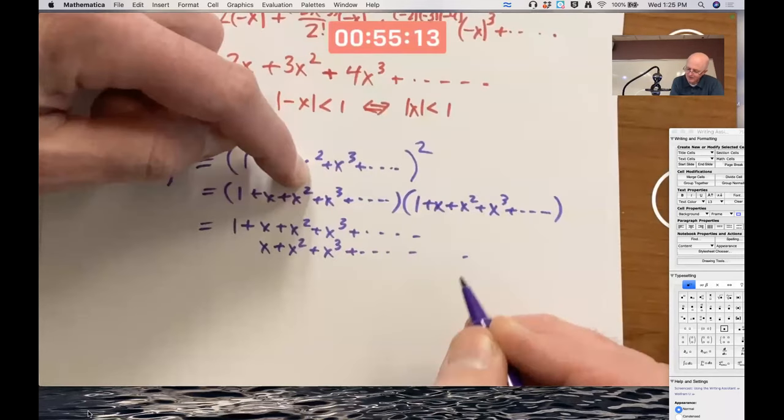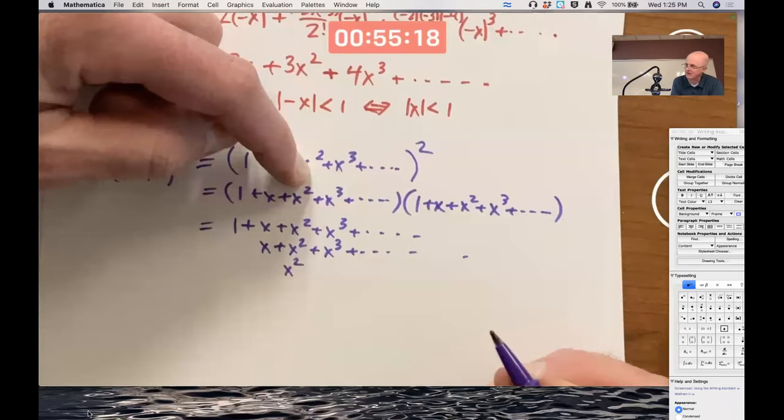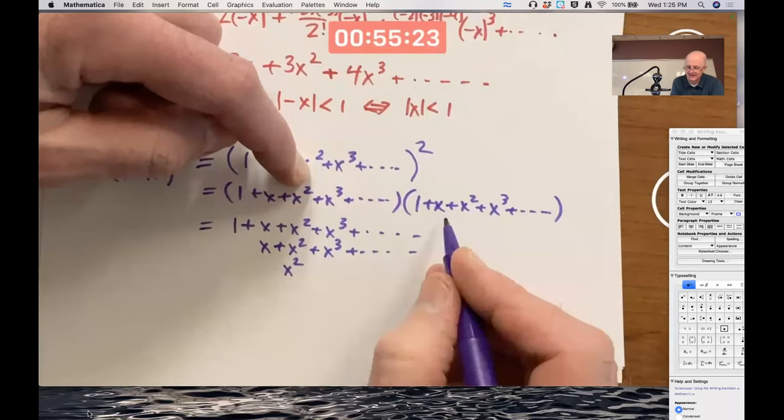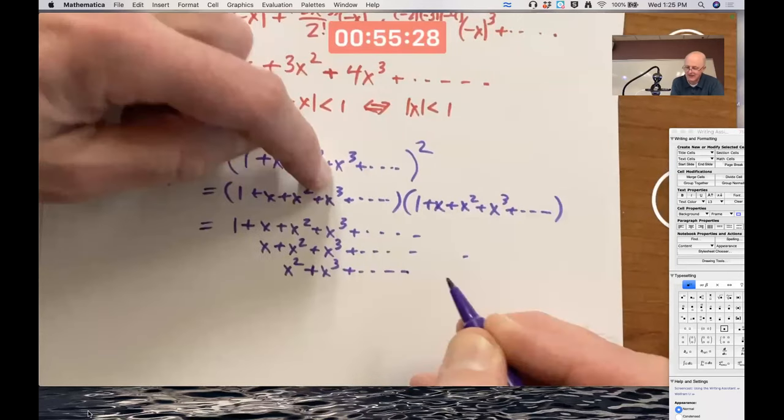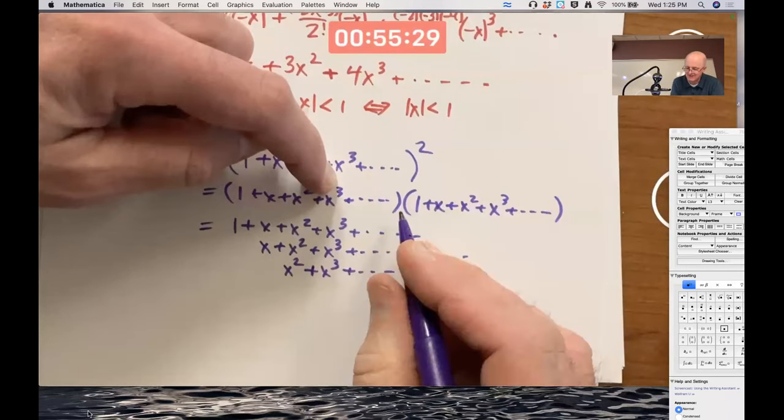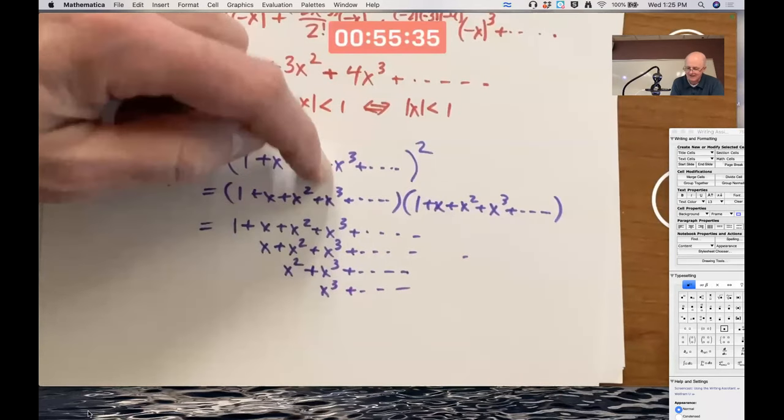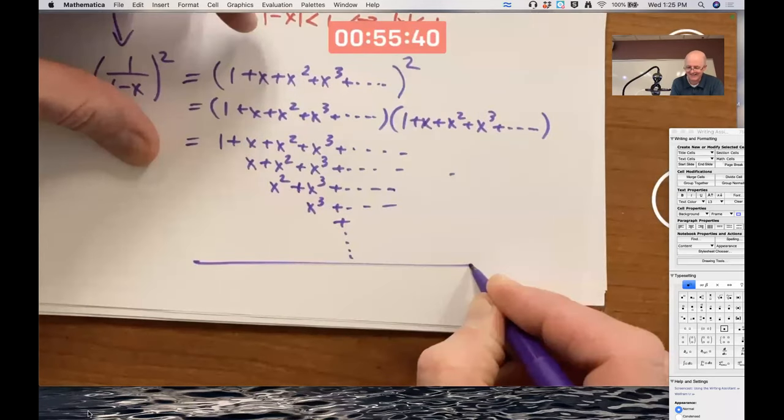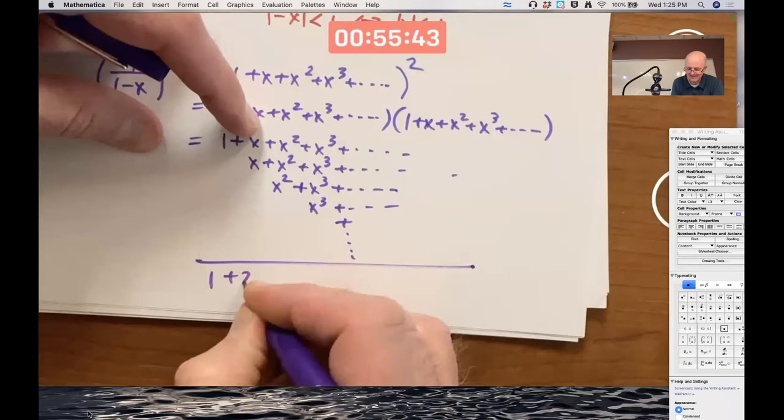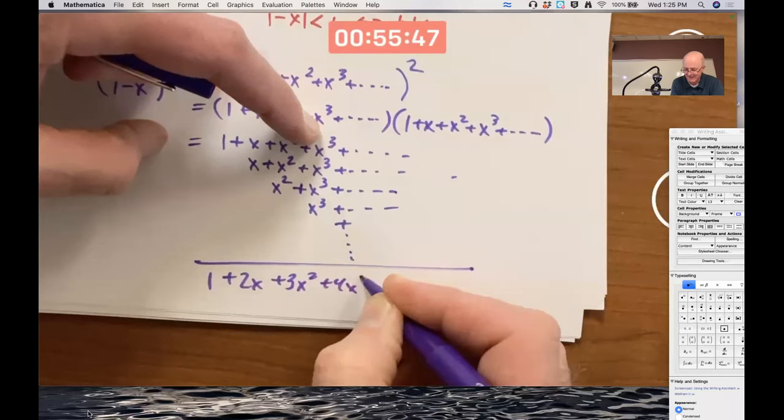Now go to the next term, x squared, and multiply it times everything on the right. x squared times 1 is x squared. Put it under all the other x squareds. See where this is going? x squared times x is x cubed. Put it under the other x cubed. Et cetera. Go to the next one, x cubed times everything. It starts out x cubed times 1. Et cetera. Et cetera. Add all these up. 1 plus 2x plus 3x squared plus 4x cubed, et cetera. We did it.